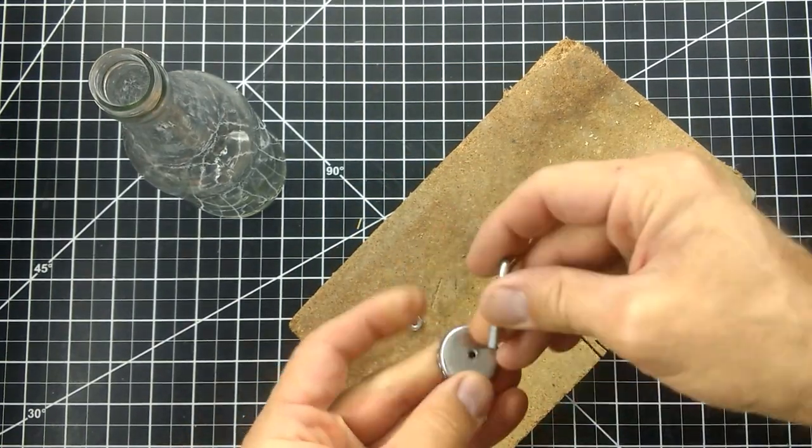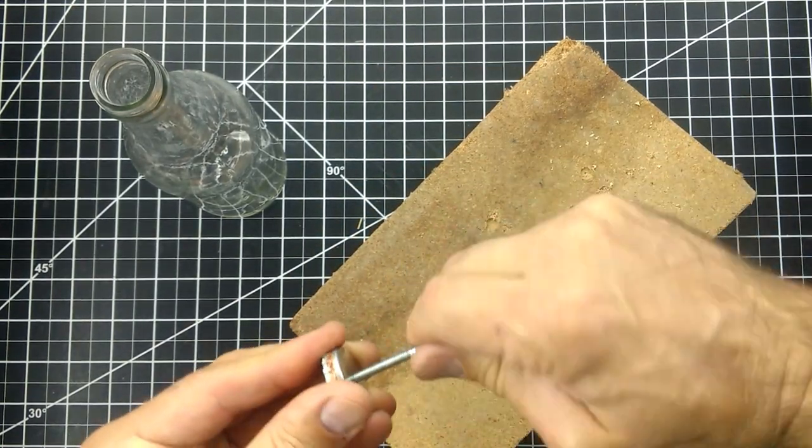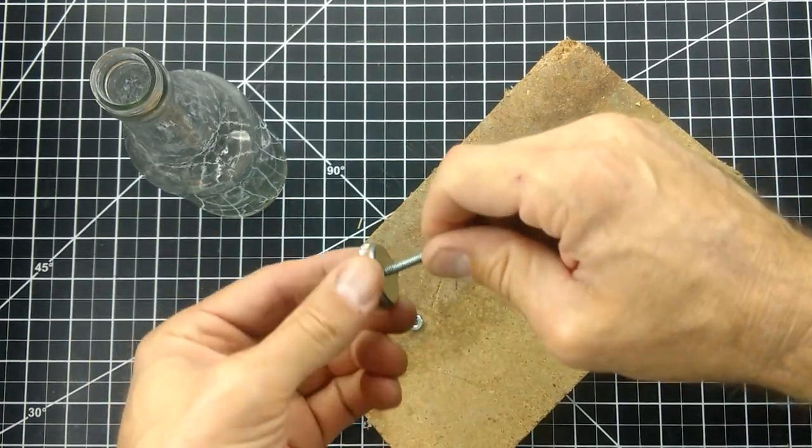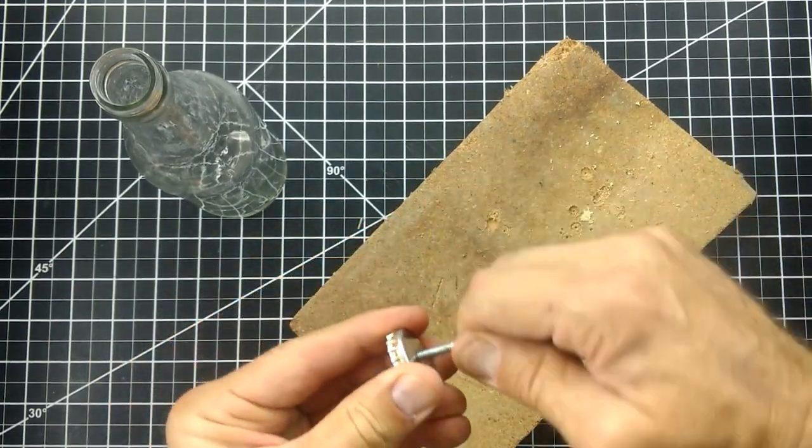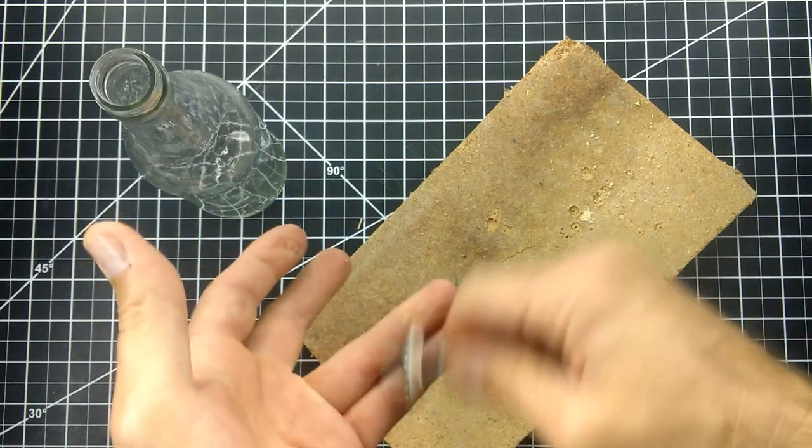A slightly bigger drill bit probably would have been better, but I was still able to get the bolt into the cap. Once I got the bolt started in the hole, I wiggled it around a little bit to make it thread on easier.